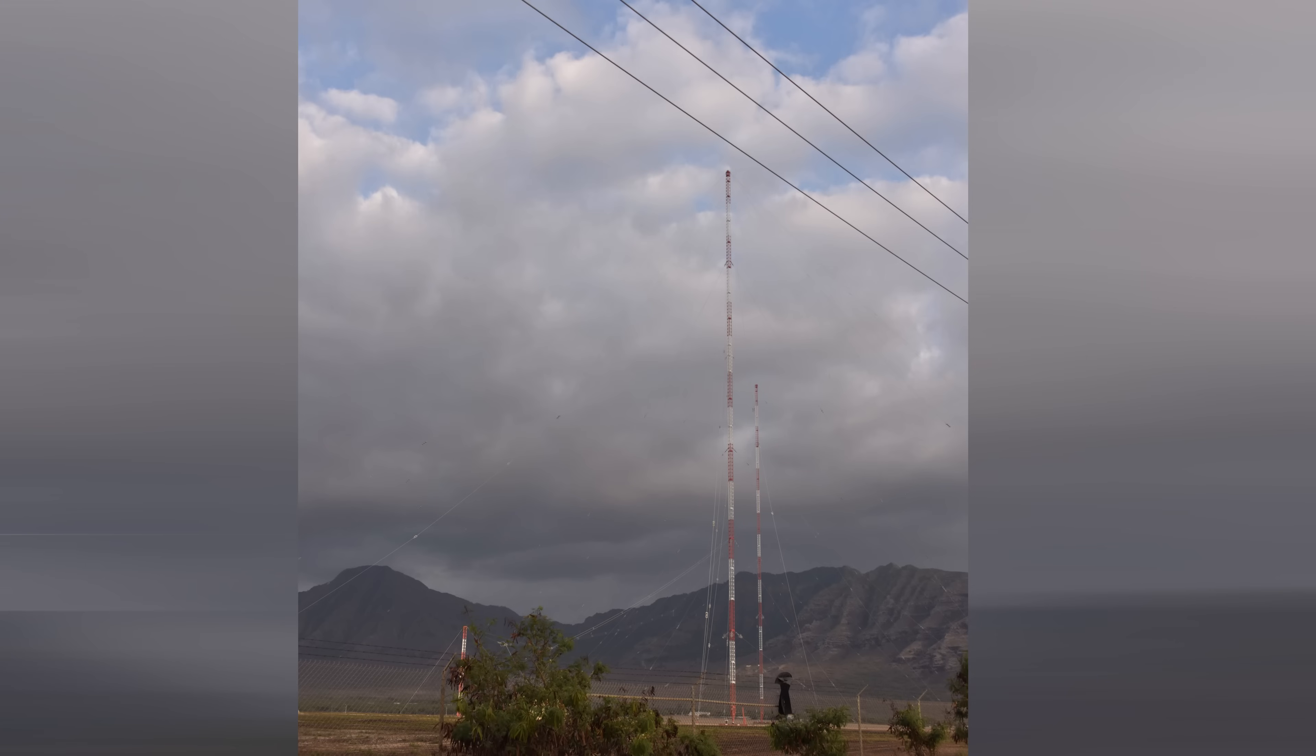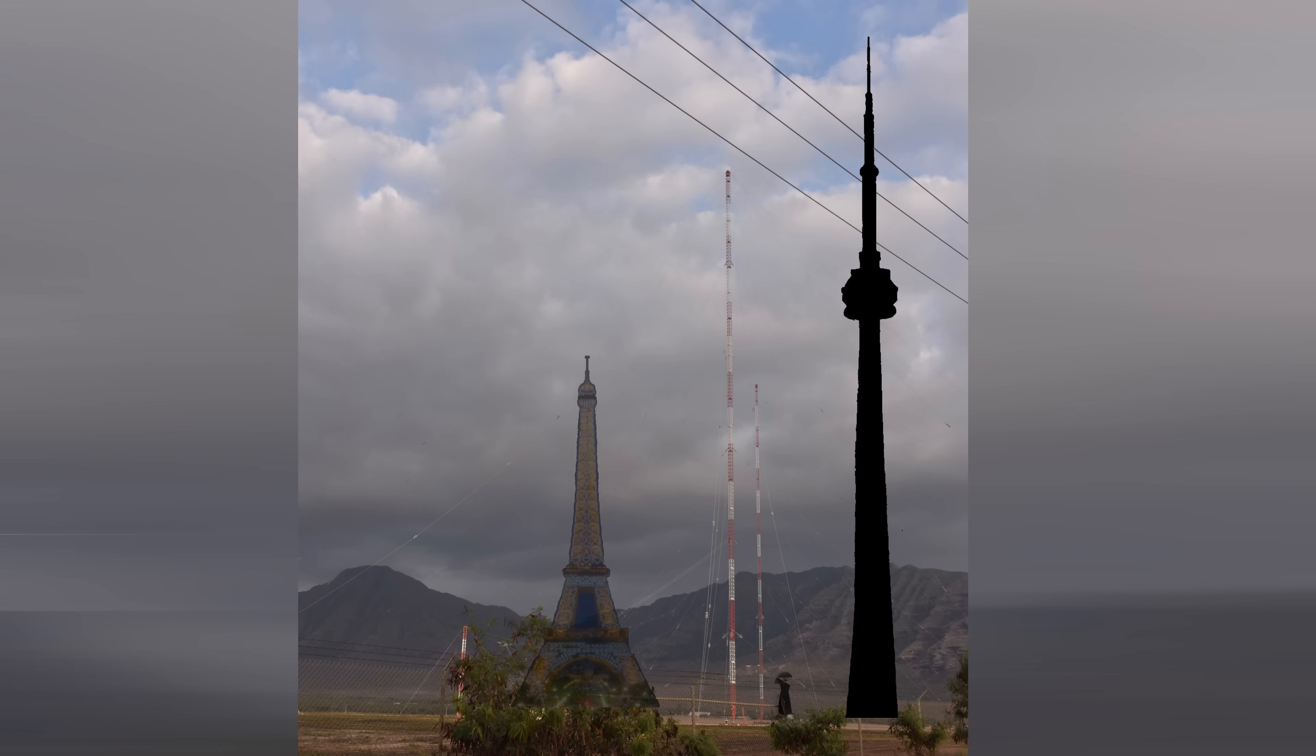To put things in perspective, the CN Tower in Toronto is 553 meters, only 20 percent taller than the masts, and the Eiffel Tower at just over 1,000 feet is only two-thirds as high. So think about that.